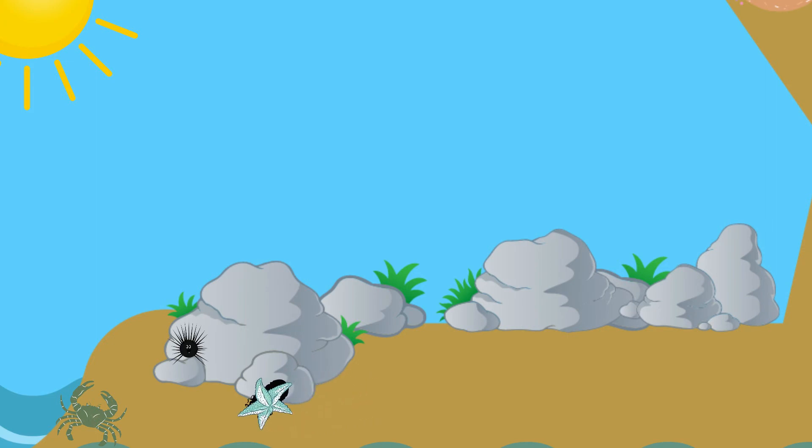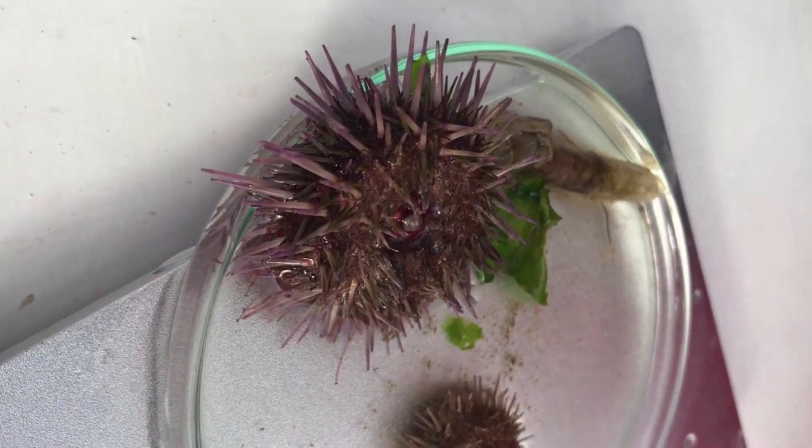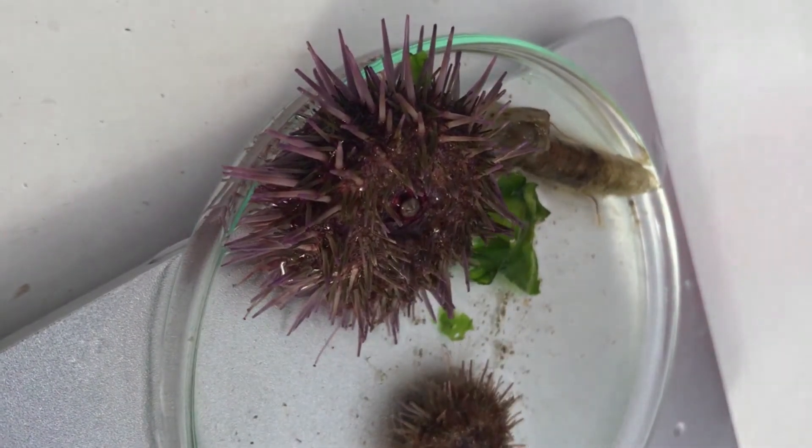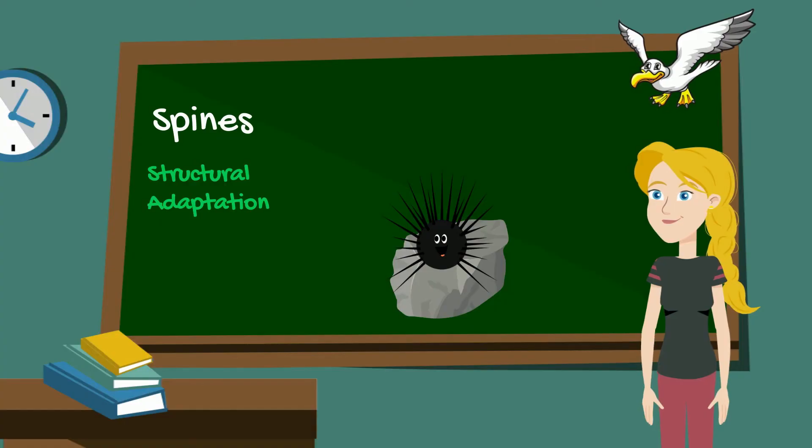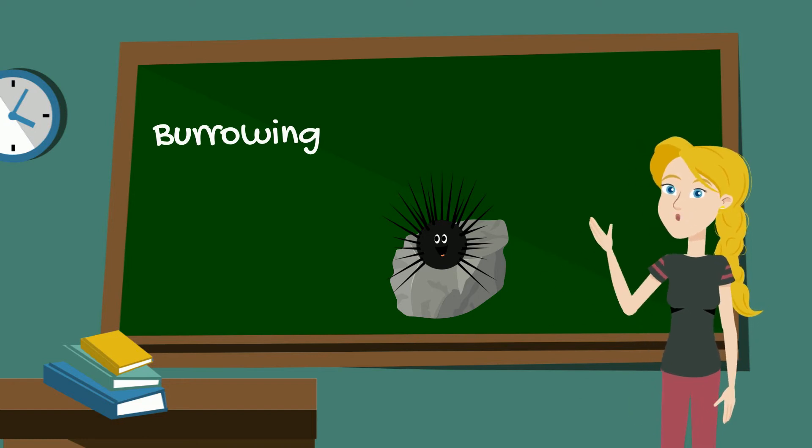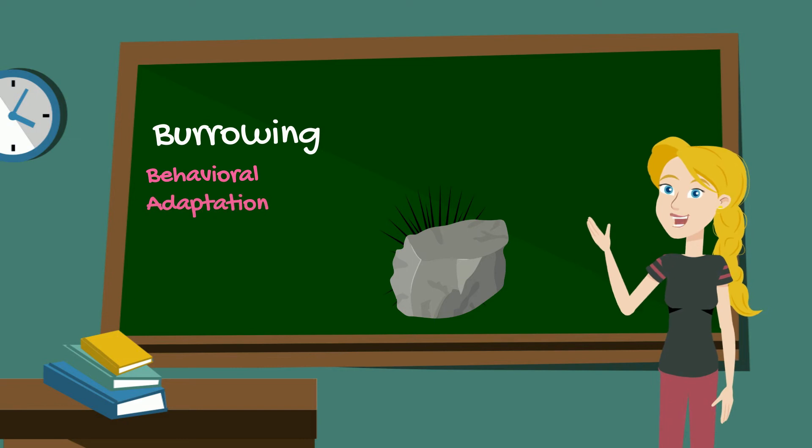Sea urchins are really cool creatures. They have spines all over the top of their body that they can use to fend off predators. It's not easy for birds and other sea creatures to get the sea urchins under their spine. In addition to this structural adaptation, they will use their teeth to burrow into the rocks to build a little hole for themselves. This is a protective behavioral adaptation.